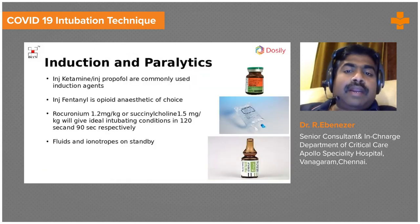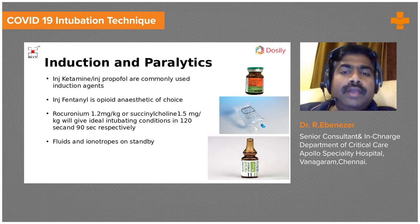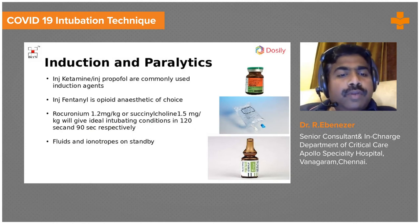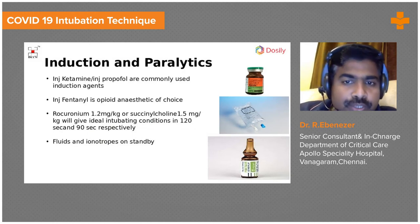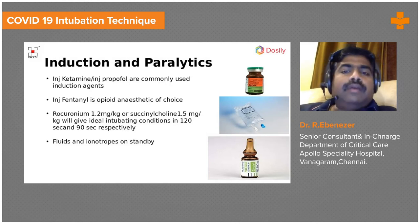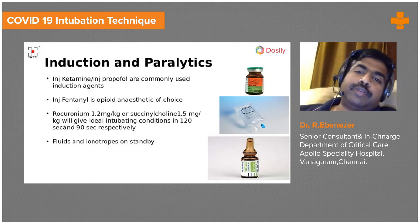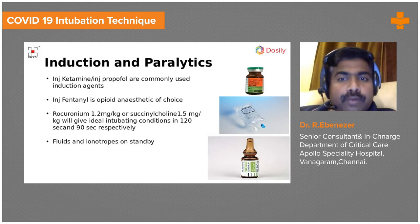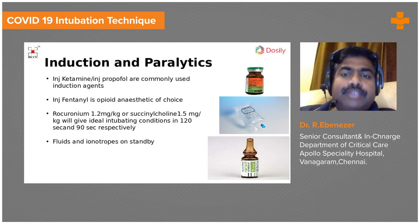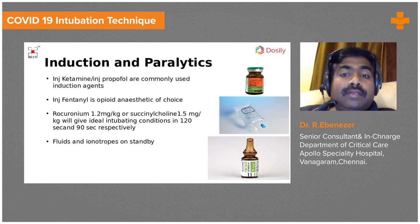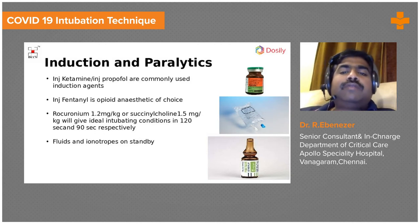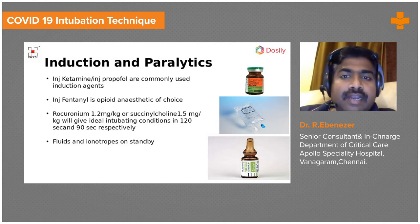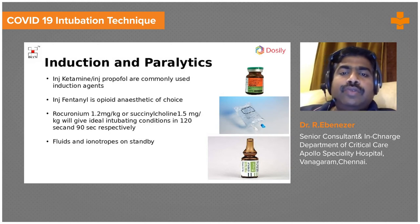Coming to induction and paralytics: once pre-oxygenation is complete, equipment is in place, the team is ready, fluids are ready, and inotropes are on standby. Some patients do have hemodynamic instability post-intubation. You can use ketamine or propofol. Propofol causes some vasodilatation and hypotension; ketamine is good even in shock anaesthesia so the chance of causing hypotension is less. Fentanyl can be used as an opioid.